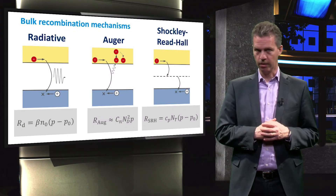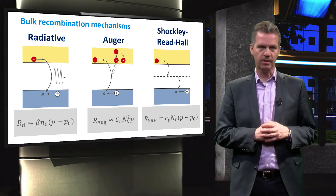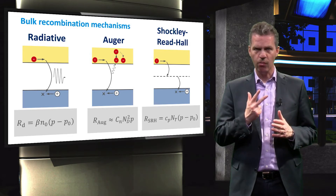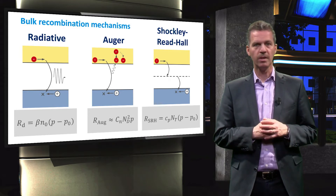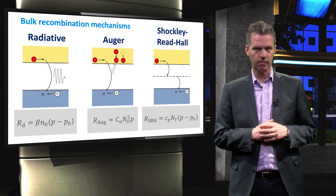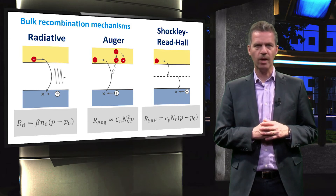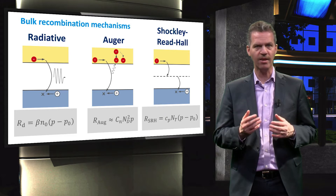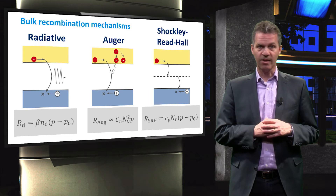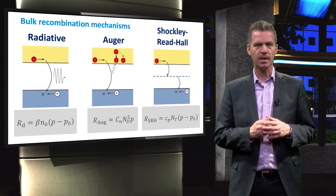So how do we find the total lifetime? Let us consider again the recombination mechanisms that may act in the bulk of the semiconductor. For the semiconductor bulk we have identified three different mechanisms: radiative recombination, Auger recombination, and Shockley-Read-Hall or SRH recombination. For each recombination process we have worked out the recombination rate, and here you see the rates for holes in N-type material under low-level injection.